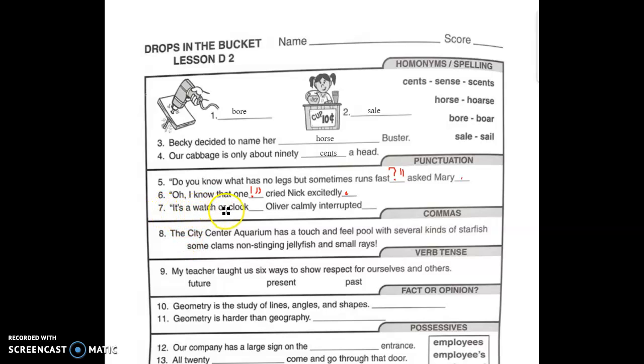It's a watch or clock. Oliver calmly interrupted. Comma here. Quotation. Quotation marks. Because he's speaking. Oliver calmly interrupted. Period. Notice all of these sentences end with a period. But the punctuation for what the person is speaking changed.